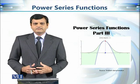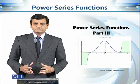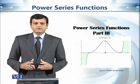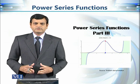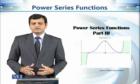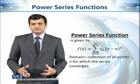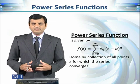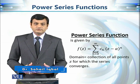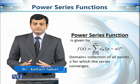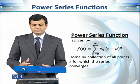So far, we have defined how to construct complex valued functions using infinite series. We call them power series functions. In our previous part, we also discussed different possibilities for the domain of this power series function. In fact, this power series may or may not converge for some particular values of Z, so the values of Z for which this series converges are the only ones in the domain of this power series function.